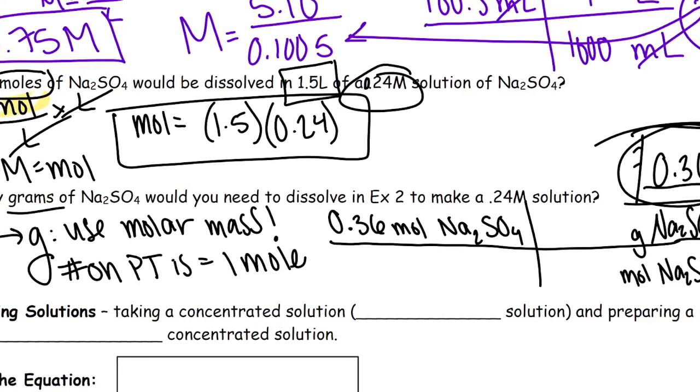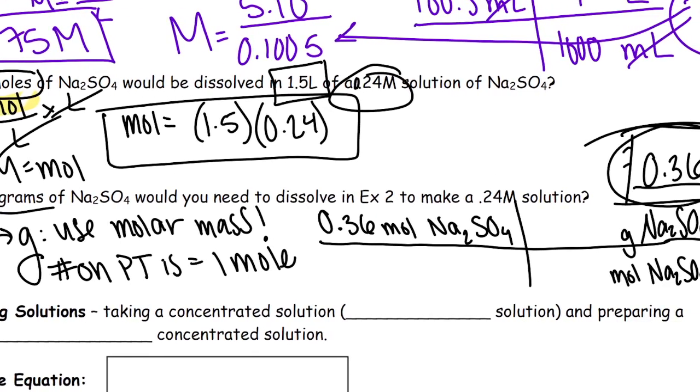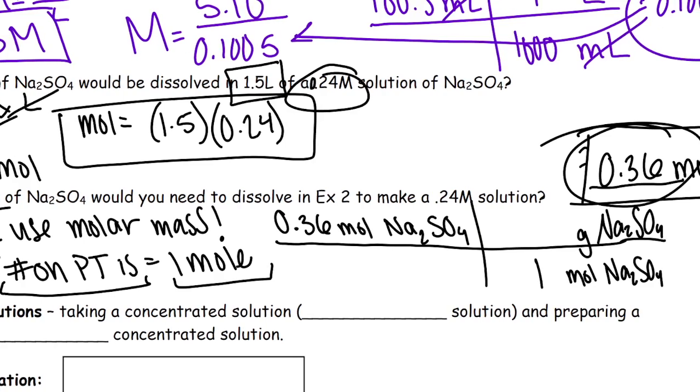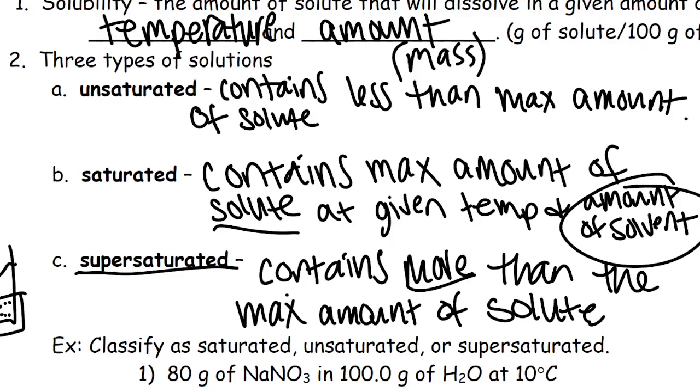So remember that the number on the periodic table is equivalent to 1 mole of whatever that substance is. But in this case, I don't have 1 mole of the substance. I have 0.36 moles. So I'm going to put 0.36 moles of Na2SO4. And then I need to put that into a little t-chart to convert it. So I would bring down moles of Na2SO4. And I can convert that to grams of Na2SO4 using molar mass. So using what I just wrote here, it says the number on the periodic table is equivalent to 1 mole. So in one of these boxes, either this one or this one, I'm going to put the number 1. Does 1 go in front of grams or does it go in front of moles?